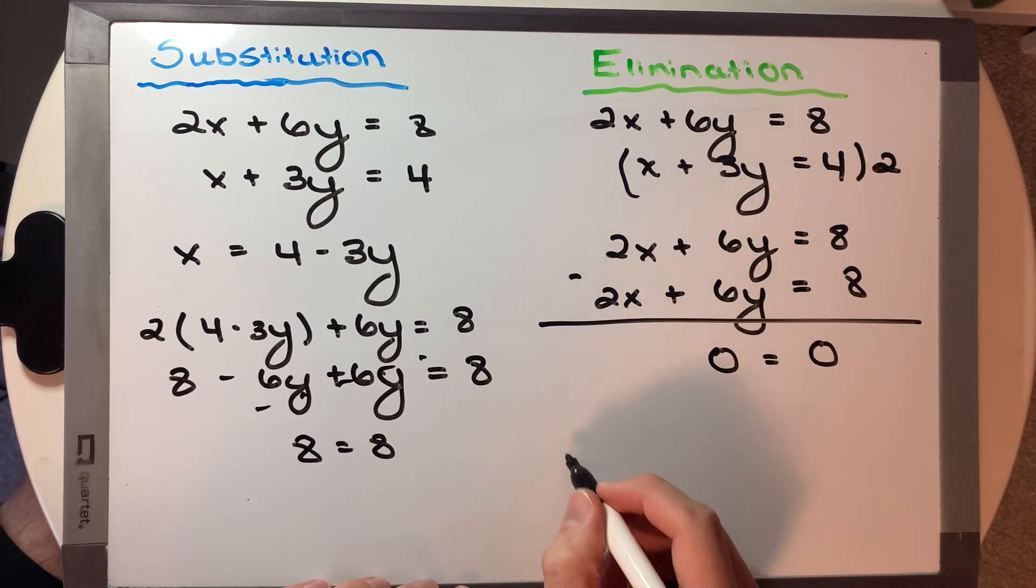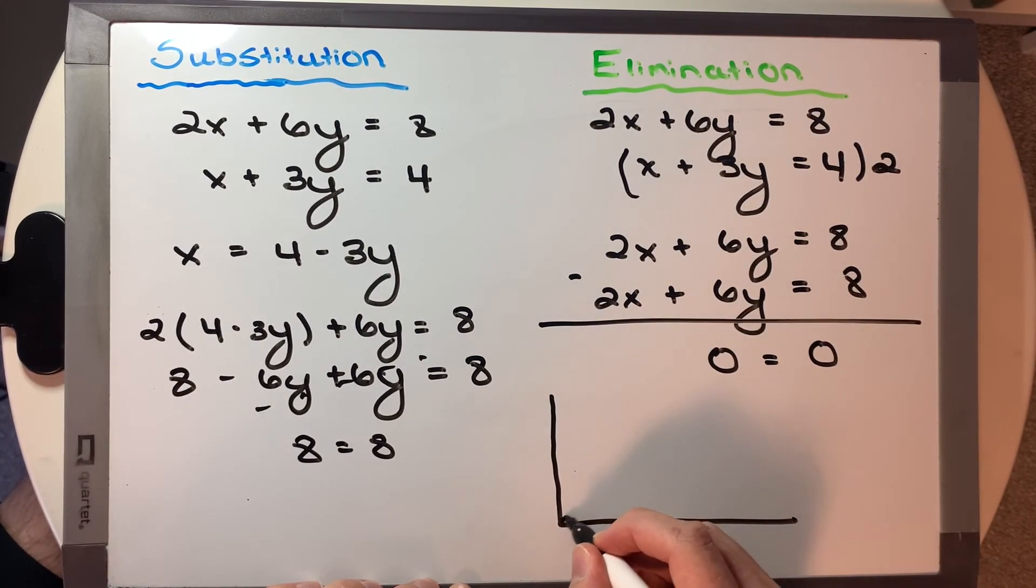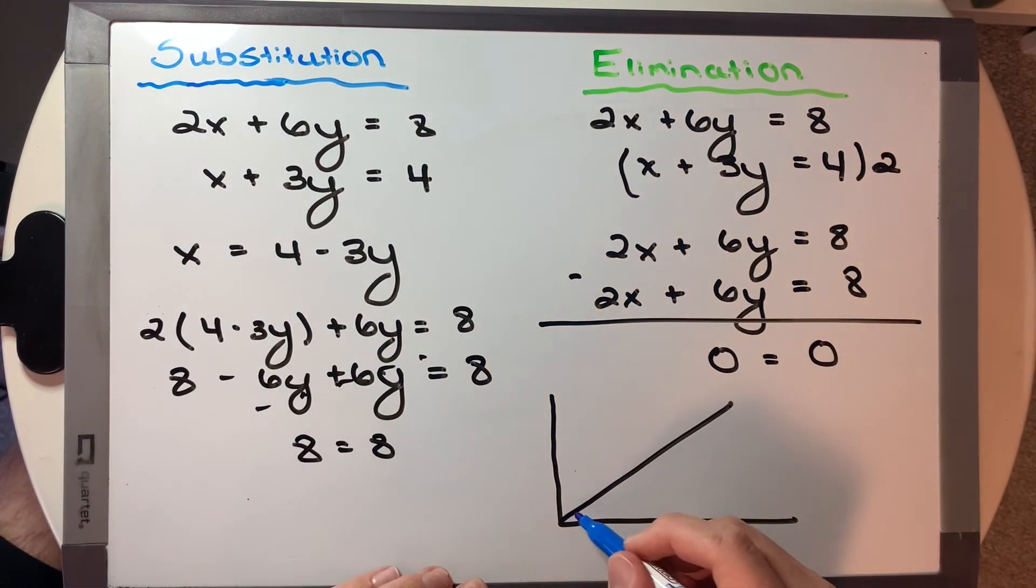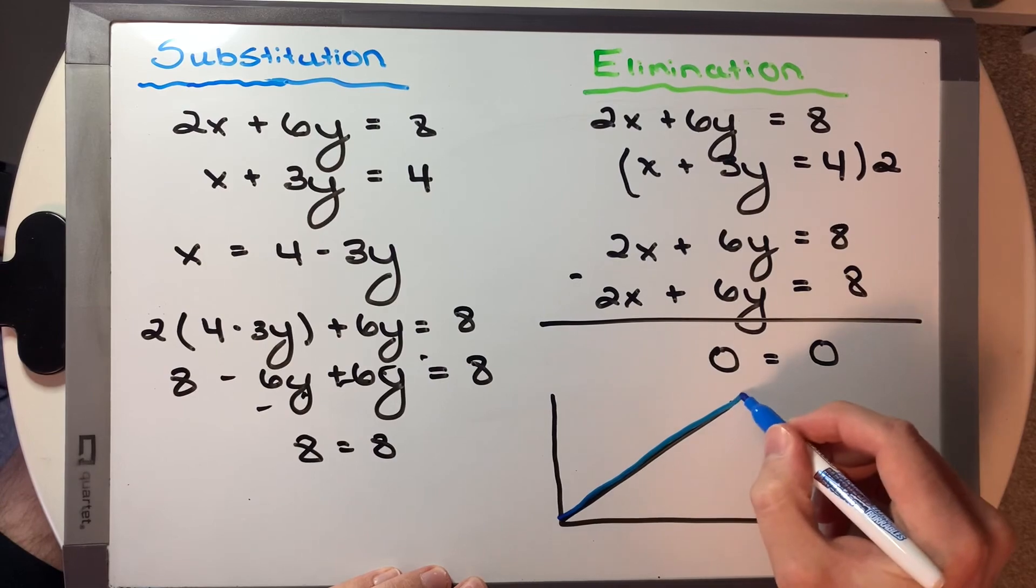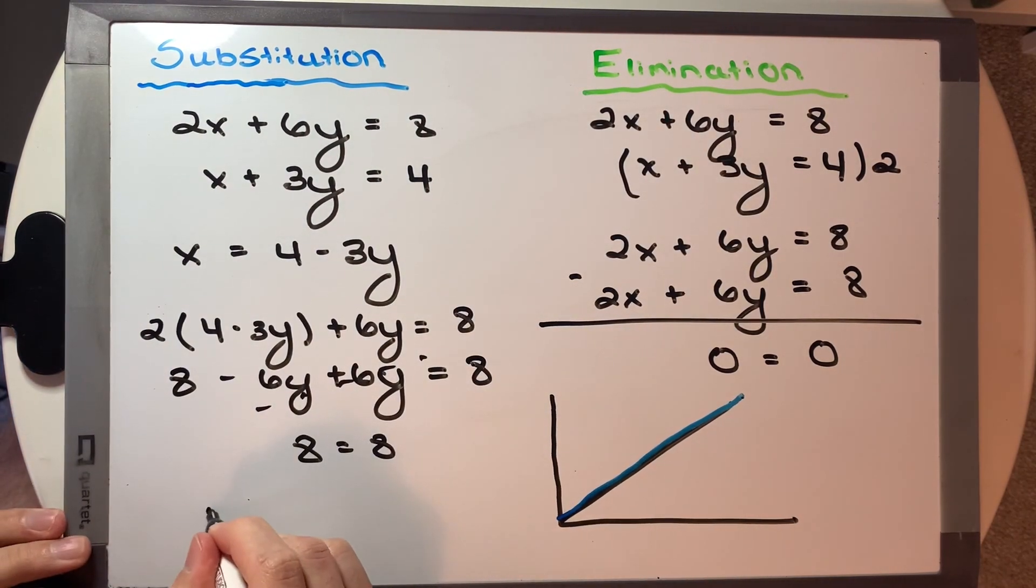So if we were to graphically put these, we would say it would almost be one line. And then let me grab a second marker here. The second line would overlay it right over top. They're actually the same equation. So the solutions should be infinite because they're all a part of the same line. So for this equation, we say, therefore, infinite solutions.